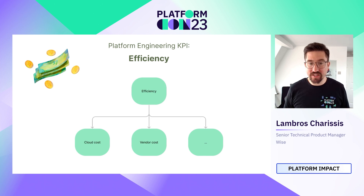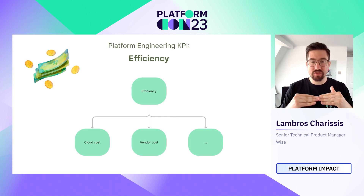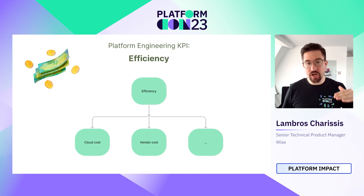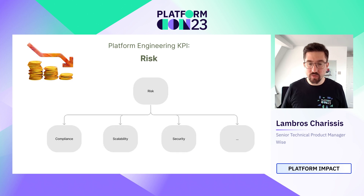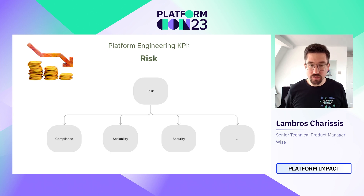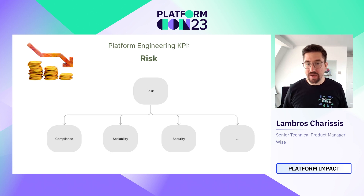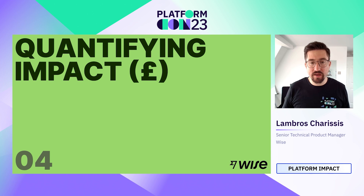For efficiency — 'eventually free' is our mission — productivity means keeping input stable and maximizing output, while efficiency means keeping output stable and minimizing input. Platform owns cloud cost, vendor cost, and so on. Then there's risk: we want to make sure risk stays within appetite, protecting our customers and the business. Platform owns compliance, scalability, and security risks, and by mitigating those we make an impact.